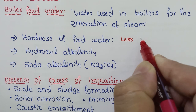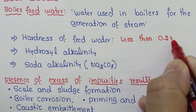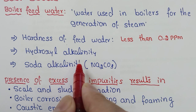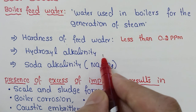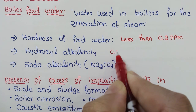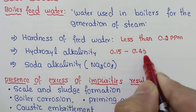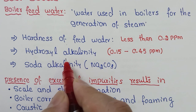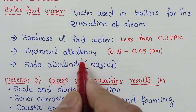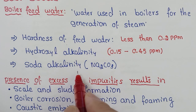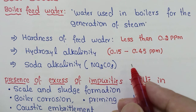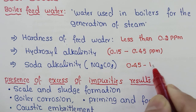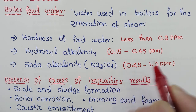The hardness of feed water should be less than 0.2 ppm. Hydroxyl alkalinity — due to caustic soda (NaOH) or hydroxyl ions — should be between 0.15 to 0.45 ppm. This is the tolerable range, and it may be in the form of sodium hydroxide, potassium hydroxide, or any hydroxyl ion. Soda alkalinity, due to dissolved sodium carbonate (Na₂CO₃), should be between 0.45 to 1.0 ppm.